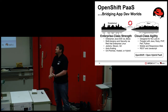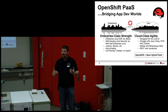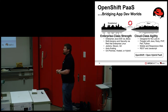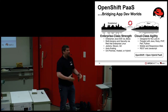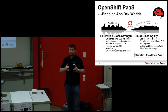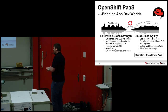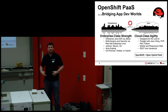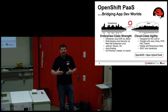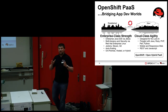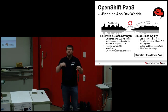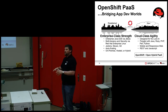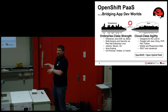OpenShift as a platform bridges two worlds. We provide support for Java EE and JBoss, building on Red Hat Enterprise Linux and proven technologies that enterprises have used for years. We also want to leverage newer agile technologies like Ruby and Python — languages that are great but perhaps less trusted by enterprises. OpenShift tries to bridge these two worlds and provide both the technologies favored by enterprises and those favored by developers and users.